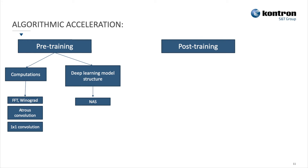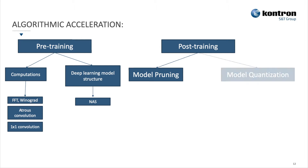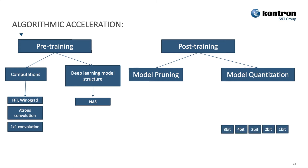The second part is post-training. Once you have developed your model, trained it, and have good results, and you want to deploy it, there are two main techniques: model pruning and model quantization. With model quantization, when you train your model you train it on a 32-bit basis, but because you don't need all that precision, you lower it down to 8-bit, 4-bit, or even 1-bit.